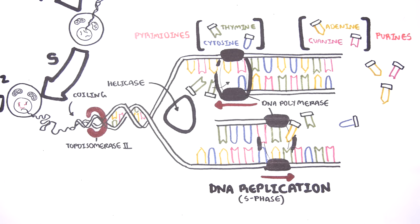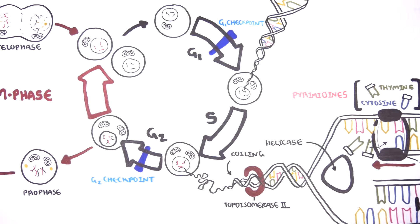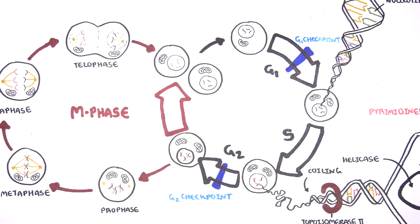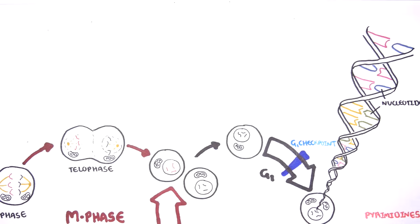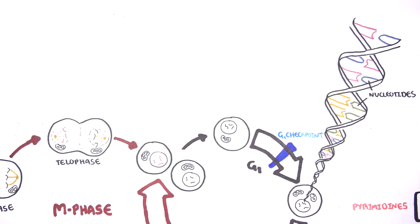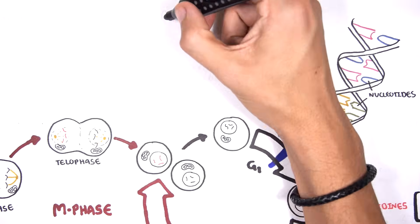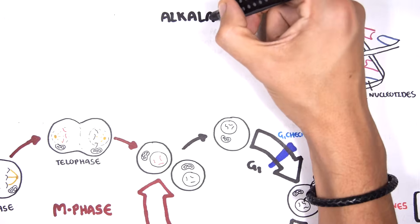Chemotherapy agents target different parts of the cell cycle, and because of this, they are grouped into different classes. Let's take a look at the different classes one at a time. First, let's begin with alkylating agents, the oldest anti-cancer cytotoxics.